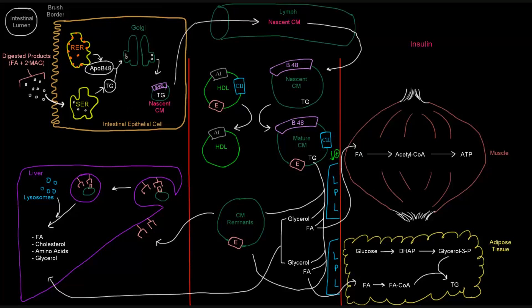So from the intestinal epithelial cells, the nascent chylomicron will travel through into the lymph, where we have the nascent chylomicron. And it will eventually be dumped into the blood, a blood capillary, or the bloodstream. So this here in red, everything that's bound in red, is the blood.